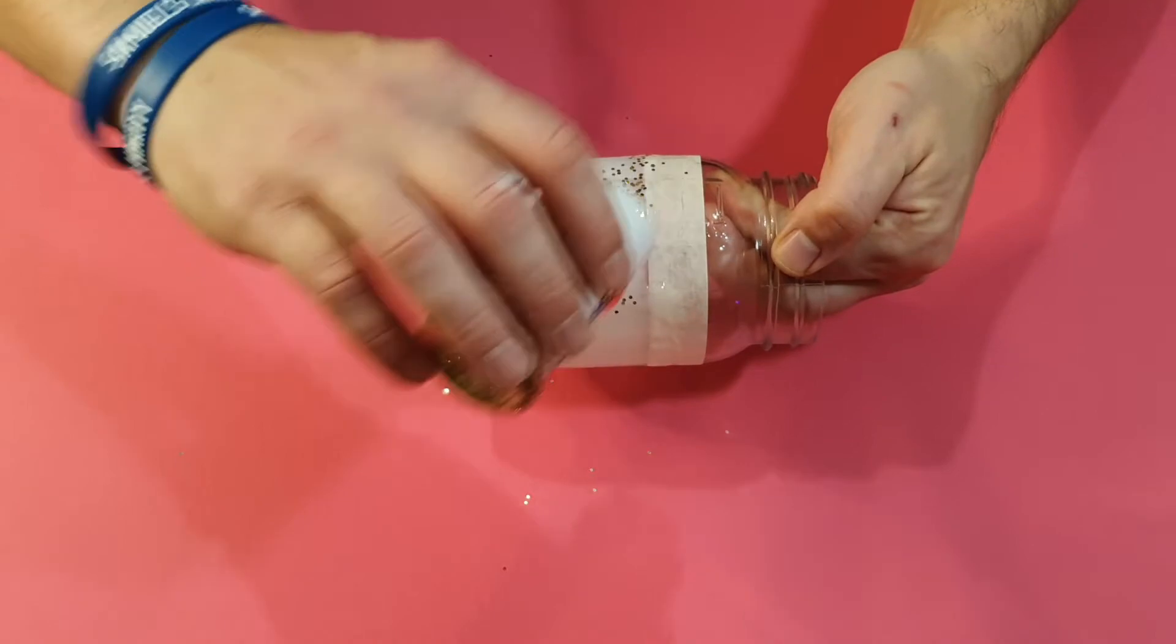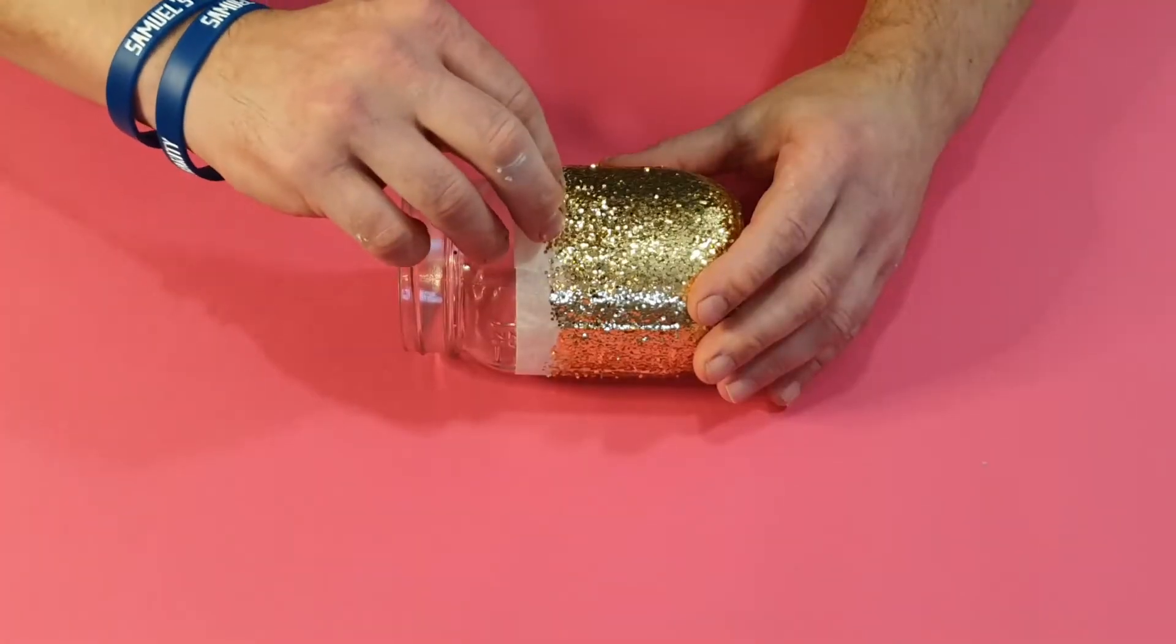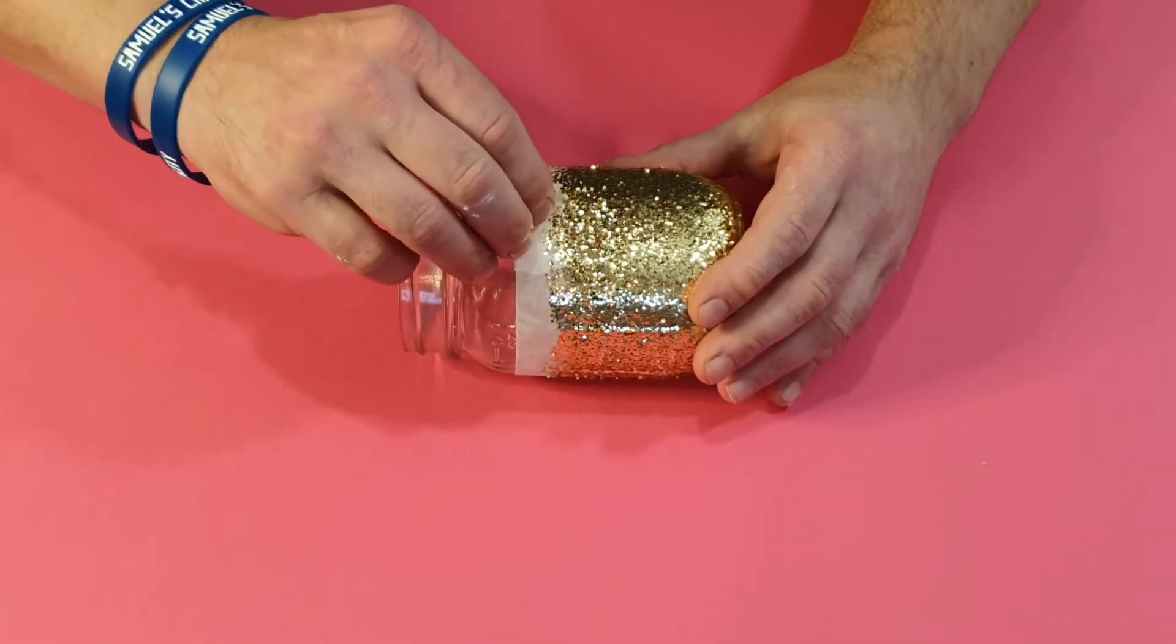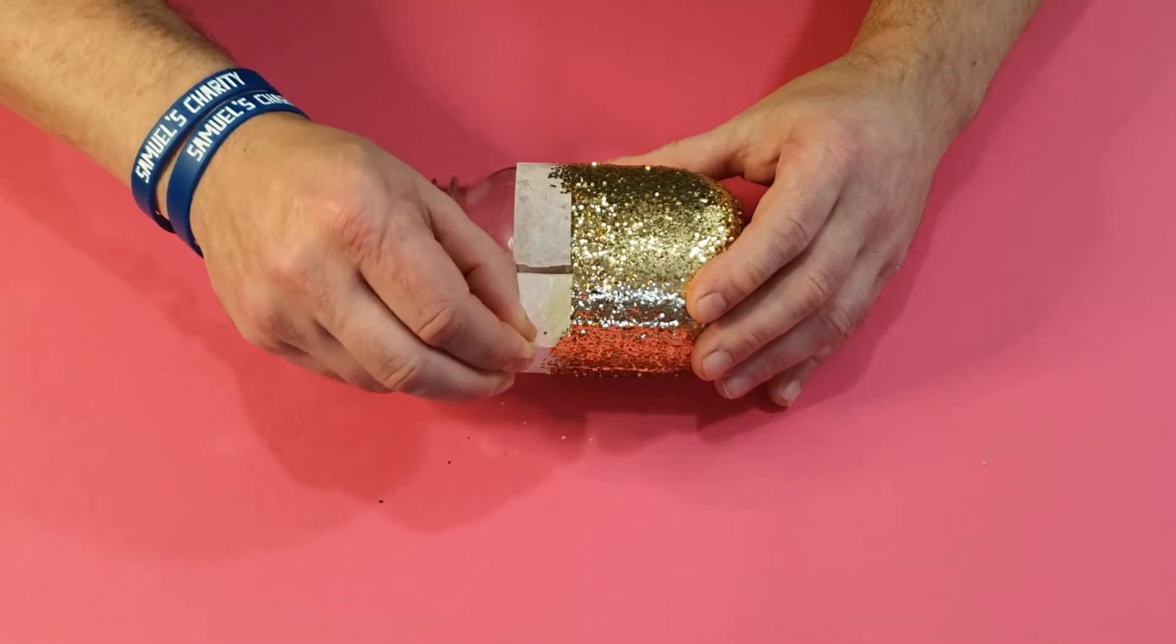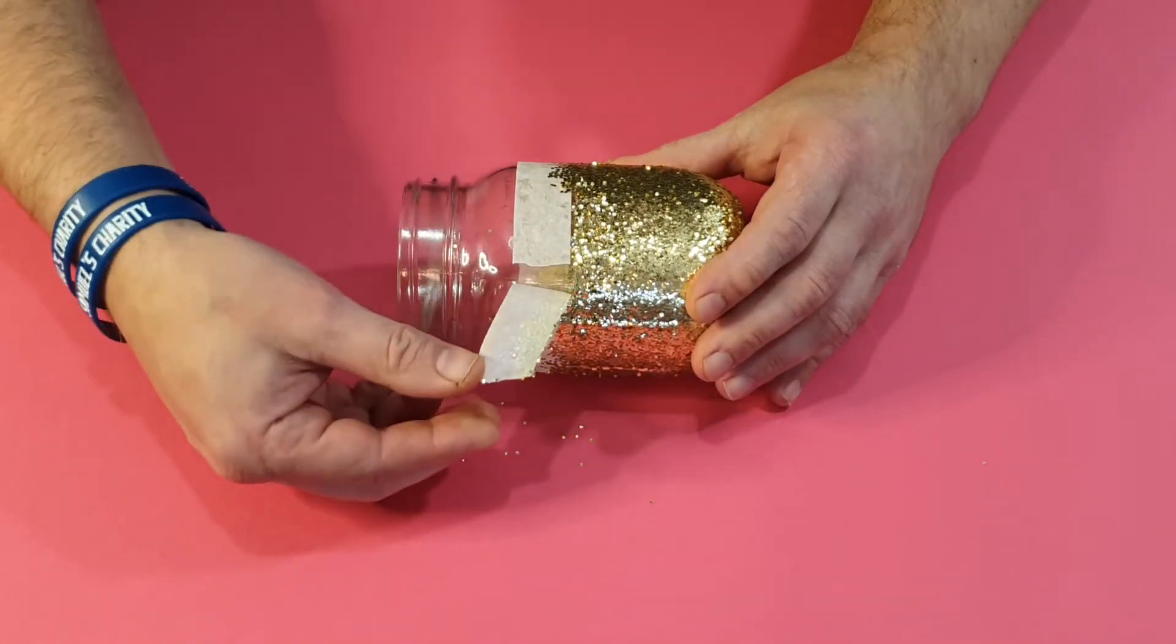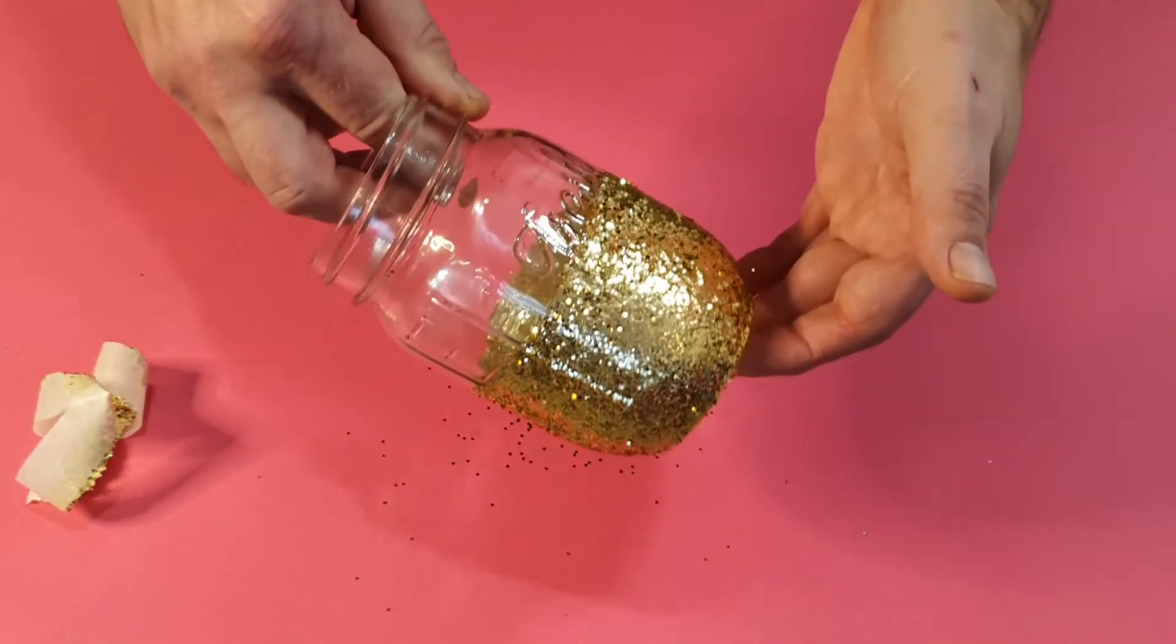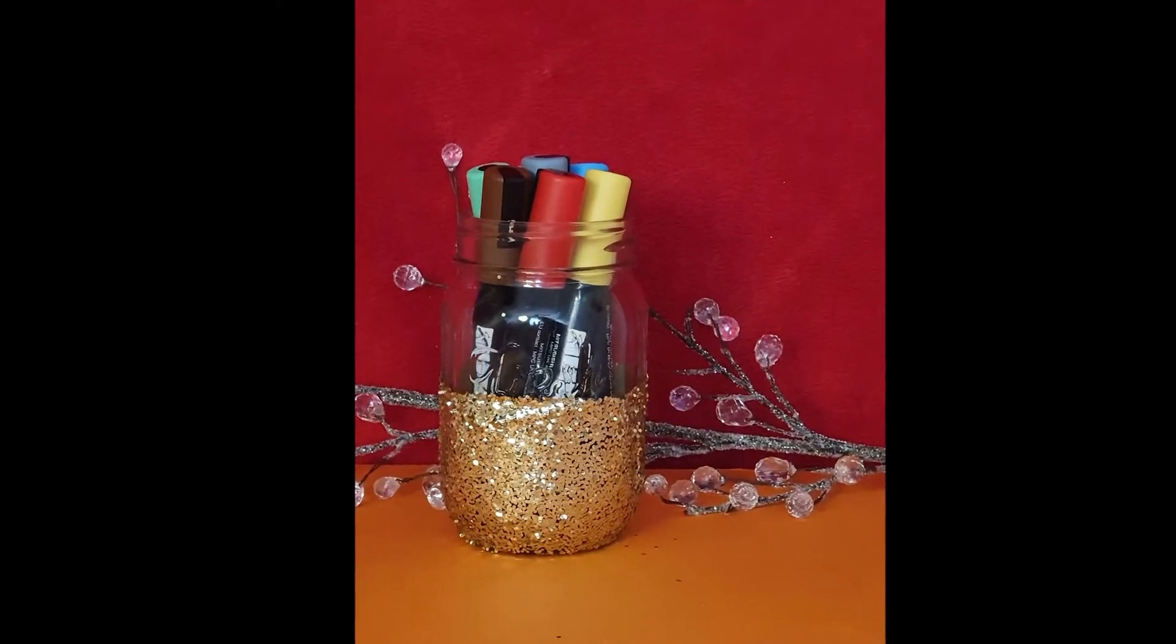Now once the glue has dried, carefully take off the masking tape. That's it, I did say careful. And now the glitter's done and you can just pop anything you like in it: pens, utensils.